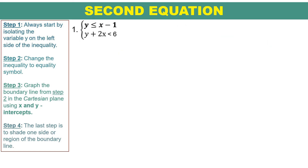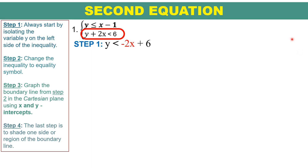Now proceed with the second inequality: y plus 2x less than 6. Following the same steps, step 1 requires isolating y. Since y is with positive 2x, we transpose positive 2x to the other side — it becomes negative. So we have y is less than negative 2x plus 6.